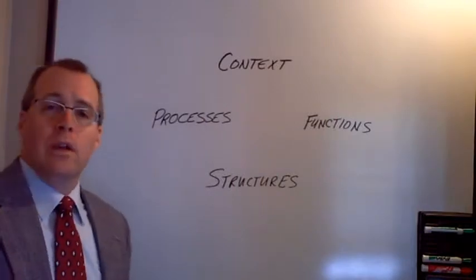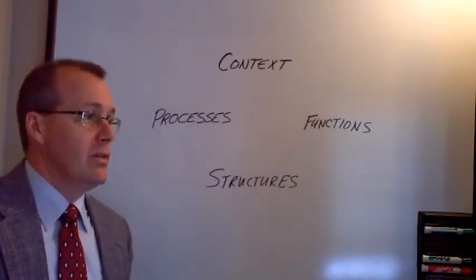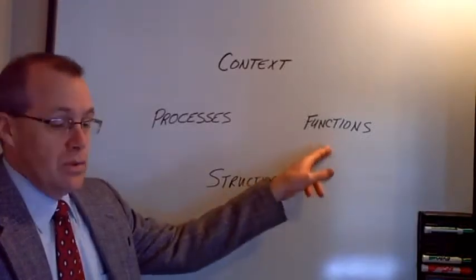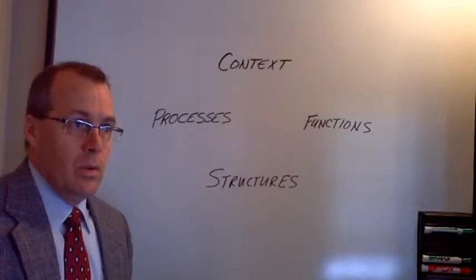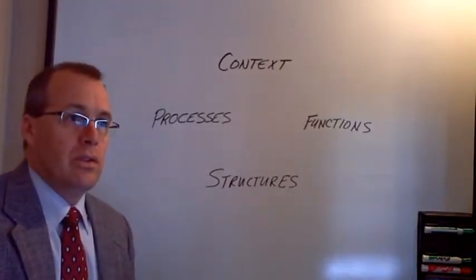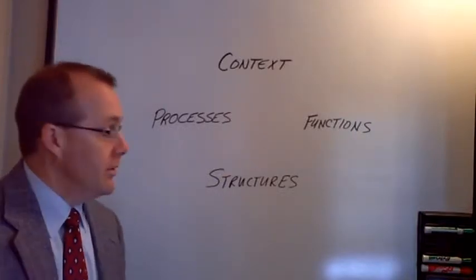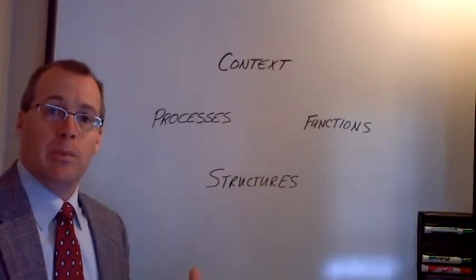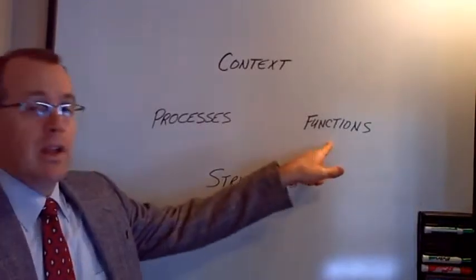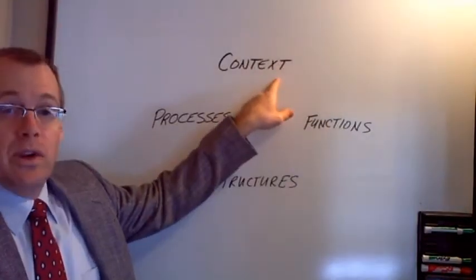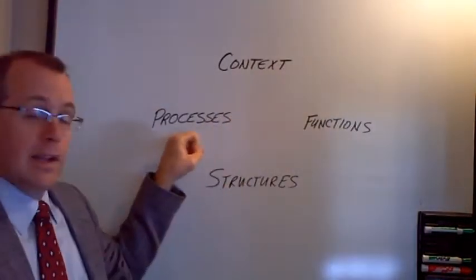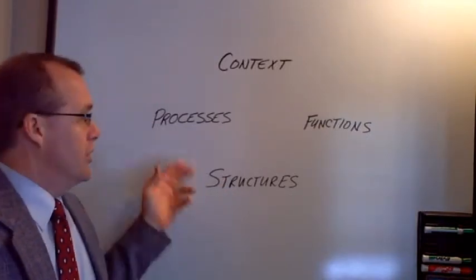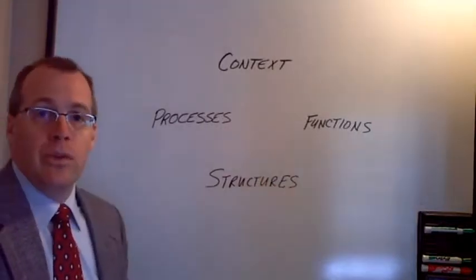Context is really understanding what's going on in the world around us, what's happening in our environment, what changes are taking place. Functions is really the question about what is it we're trying to produce? What is it that we want this system to make happen for us? Structures are how we organize people to do the work, how we put people together and in what combinations. And finally, processes, which are those things, policies, procedures that undergird the way we organize the people and produce those functions.